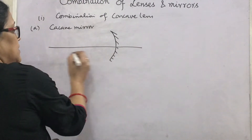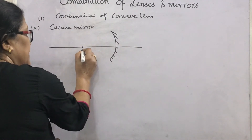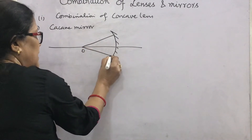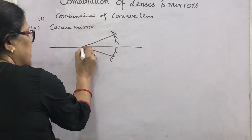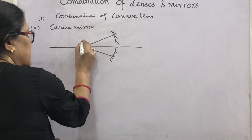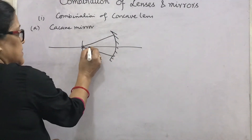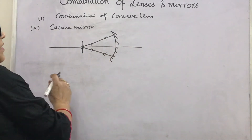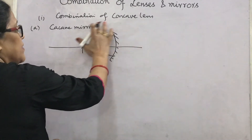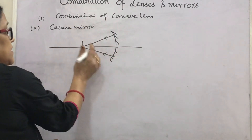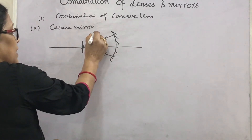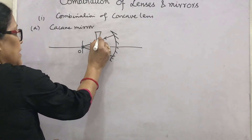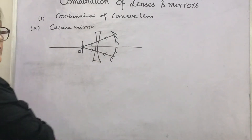On the optical bench, take a concave mirror and mount it. Place an object pin such that its real and inverted image is obtained — the rays go to the concave mirror and are reflected back. Now, to combine the concave lens, place the concave lens between the object pin and the concave mirror.